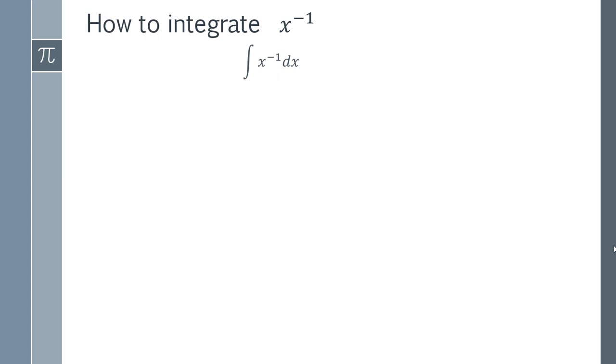So we have our integral there, and the first thing you have to realize is that this can actually be rewritten in a slightly different way. We can say that x to the power of minus 1 is actually exactly the same thing as 1 over x.